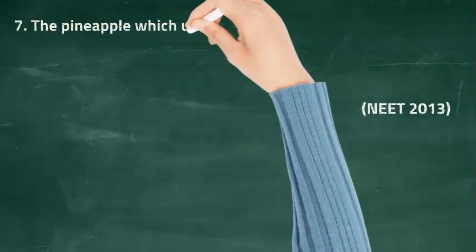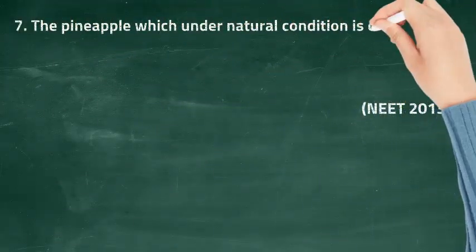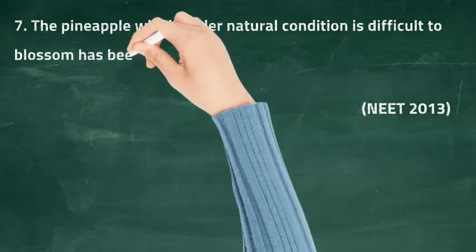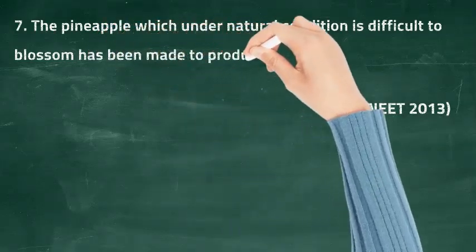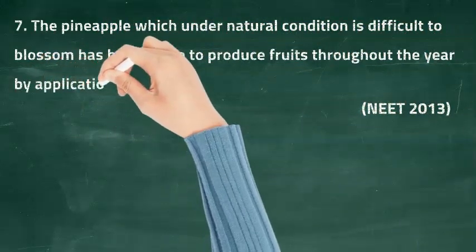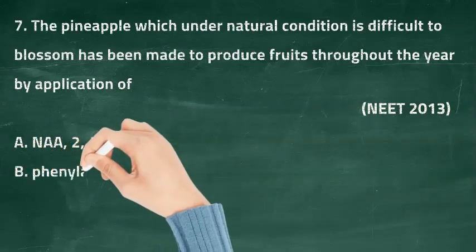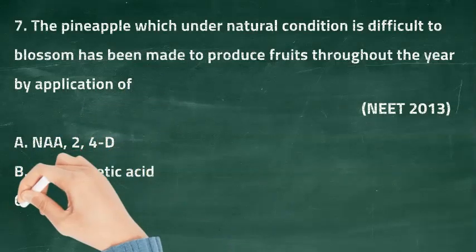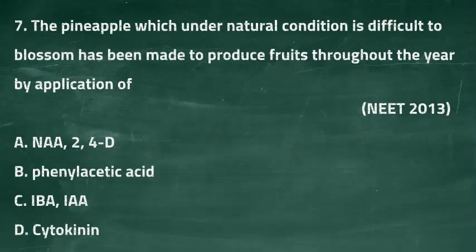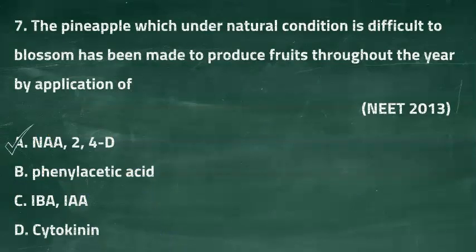Question seven: the pineapple, which under natural conditions is difficult to blossom, has been made to produce fruits throughout the year by application of — option A: NAA/2,4-D, option B: phenylacetic acid, option C: IBA and IAA, option D: cytokinin. The right answer is option A, NAA/2,4-D.